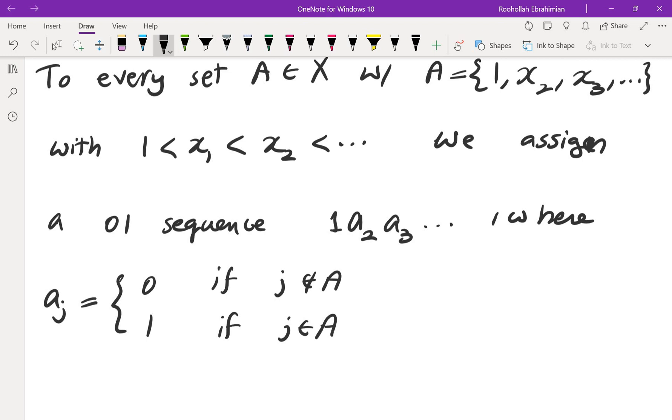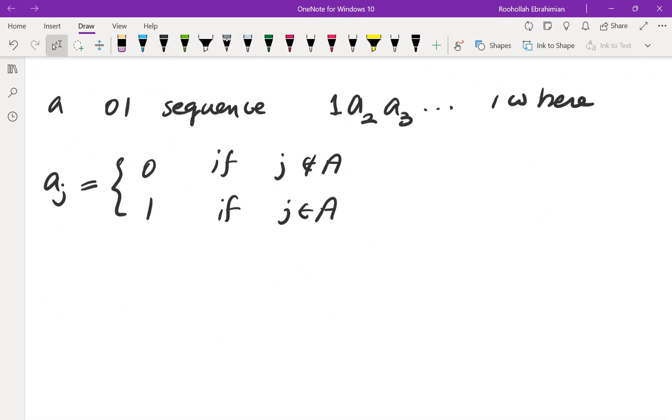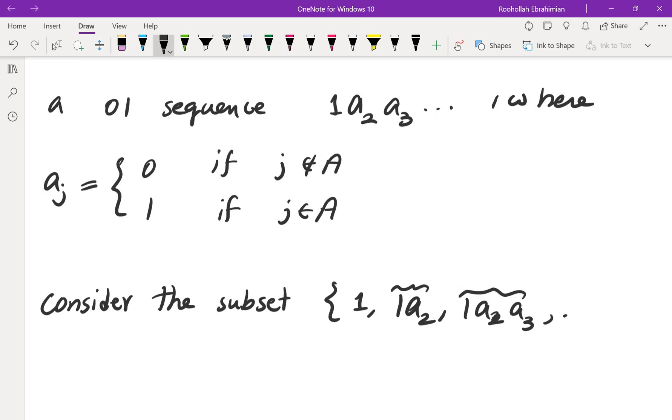Then I can create a subset of Z, Z plus. So now consider this subset. Consider the subset 1 and then 1A2 and then 1A2A3. This is a 2-digit number. This is a 3-digit number, etc.